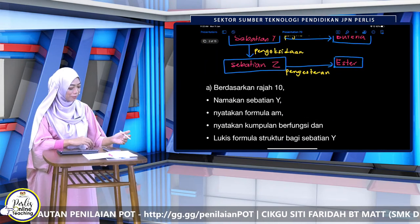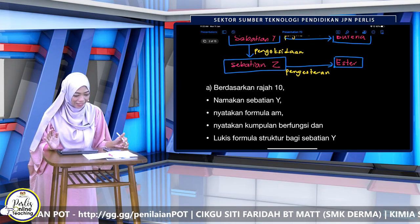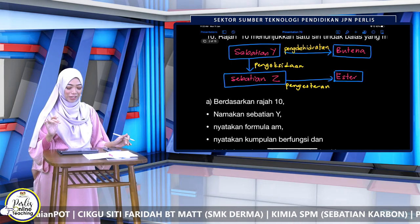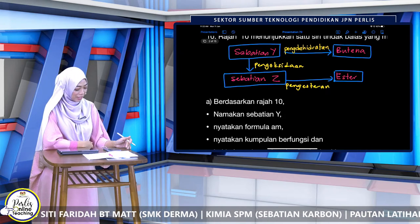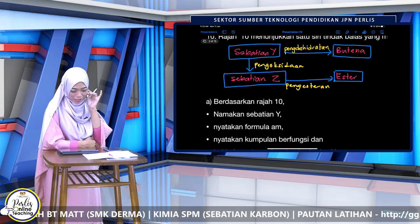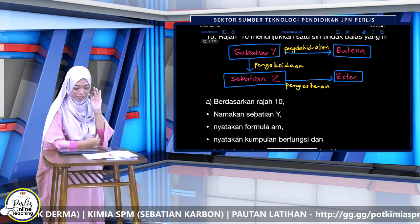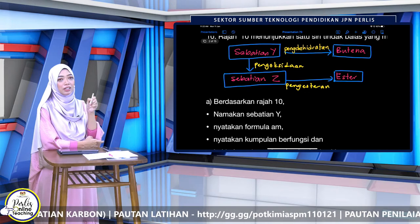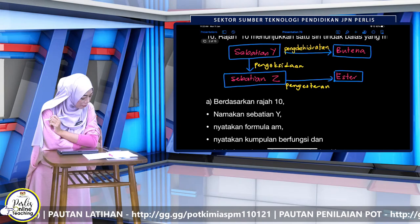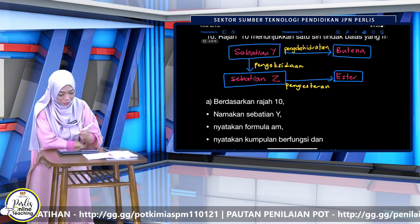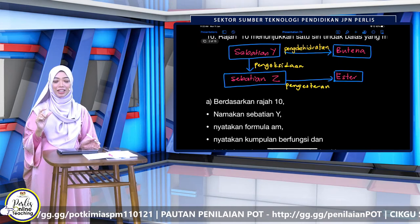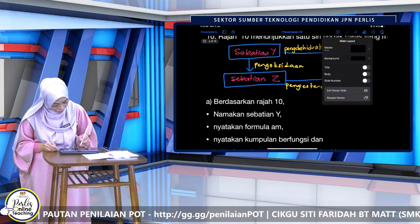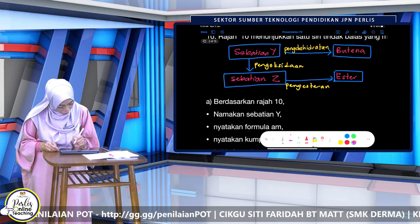Namakan sebatian Y. Kalau butena itu alkena, dan soalan tanya namakan — kalau awak jawab alkohol, itu nama siri homolog je lah. Jawapan: butanol. Kenapa butanol? Sebab kita nampak selepas penyahhidratan dia jadi butena — dia mesti sama 'but' juga sebelum dia. Jadi nama dia butanol.